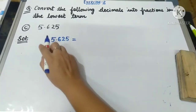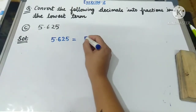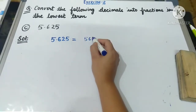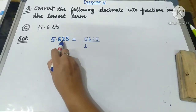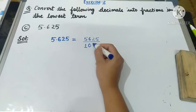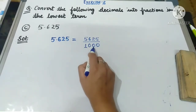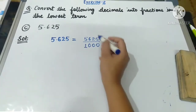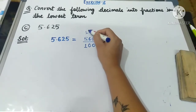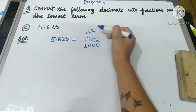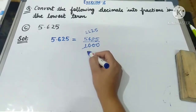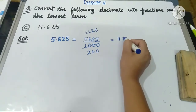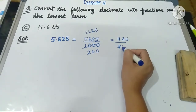Now let us solve 0.625. We write the number without the decimal point — 625 — in the numerator. In the denominator, after the decimal point there are three places, so we write 1 followed by three zeros: 625 upon 1000. This can be reduced. Dividing by 5: 625 ÷ 5 = 125 and 1000 ÷ 5 = 200, giving 125 upon 200.